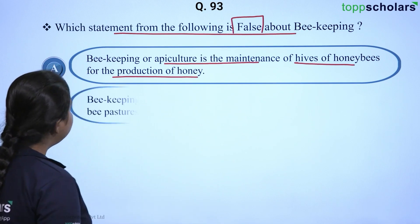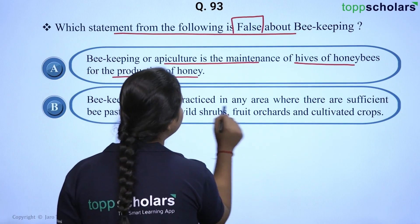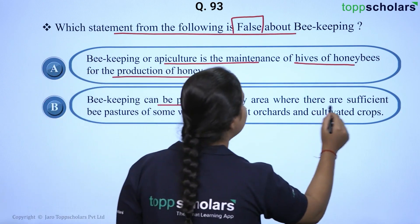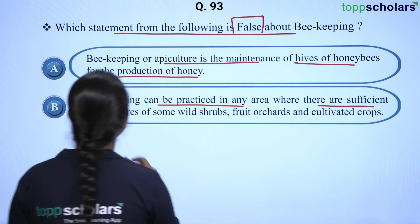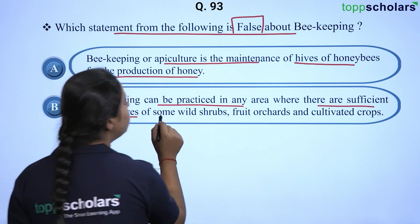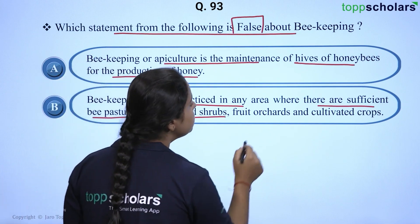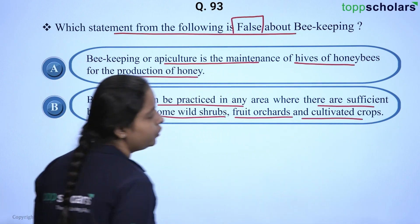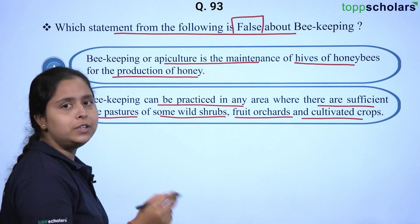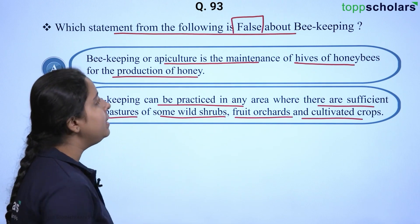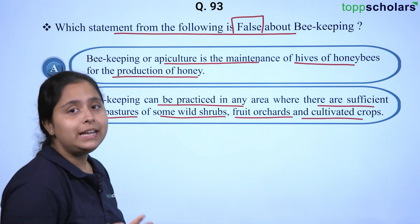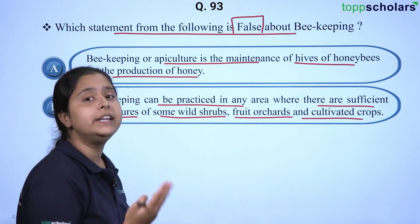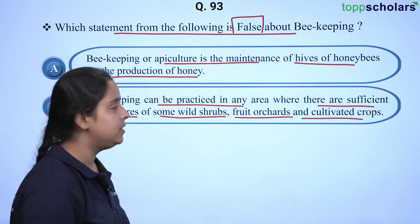Option B: beekeeping can be practiced in any area where there are sufficient bee pastures of wild shrubs, fruit orchards, and cultivated crops. This is also true — beekeeping is easy if the required conditions are met.